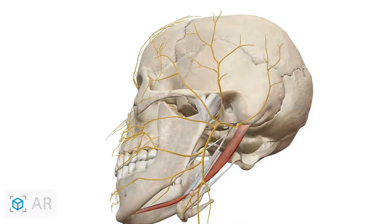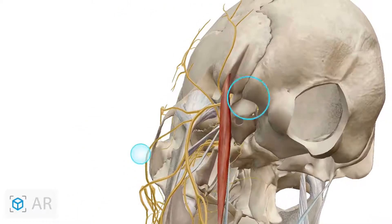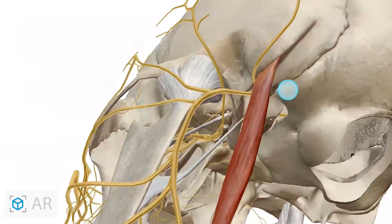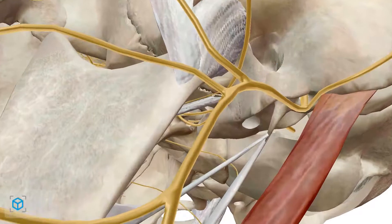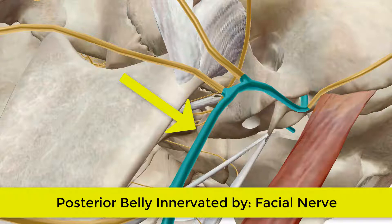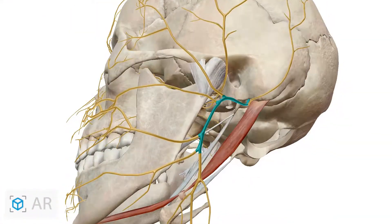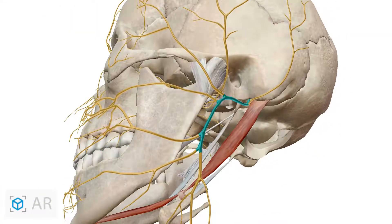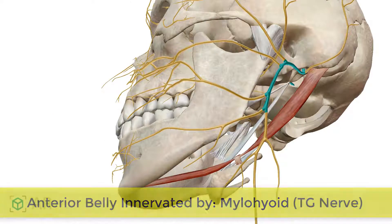Now I am showing you in the 3D diagram. This is the posterior belly, and here is the facial nerve — the posterior belly is innervated by the facial nerve. The anterior belly is supplied by the mylohyoid branch of the trigeminal nerve.